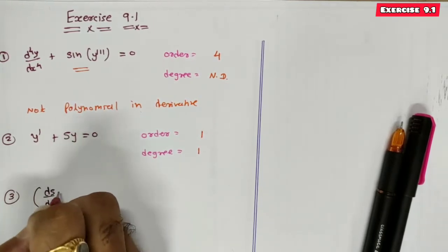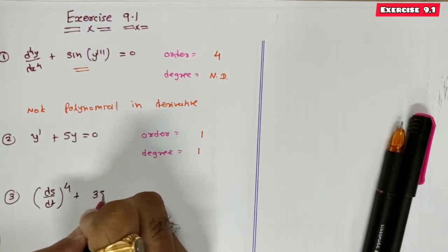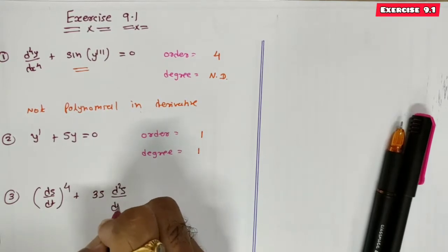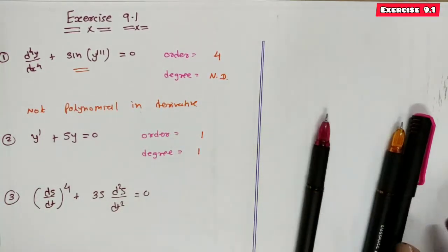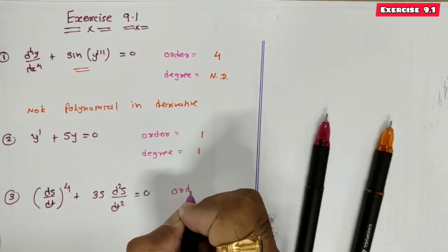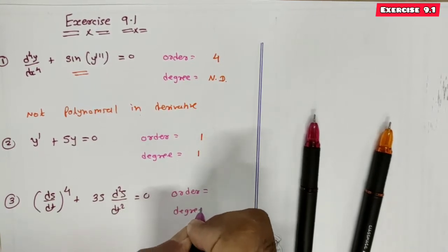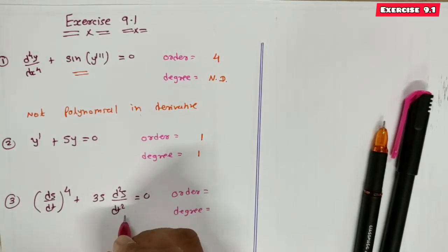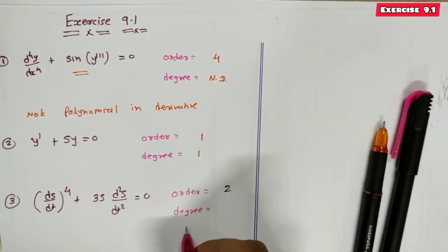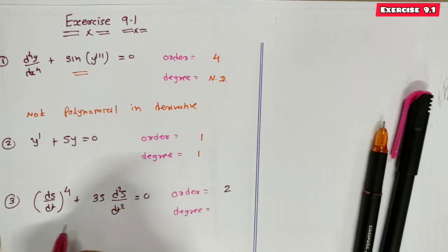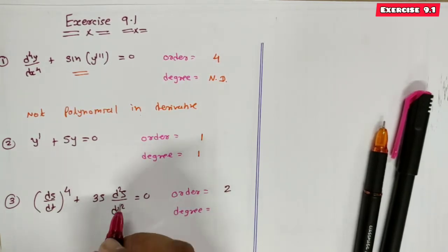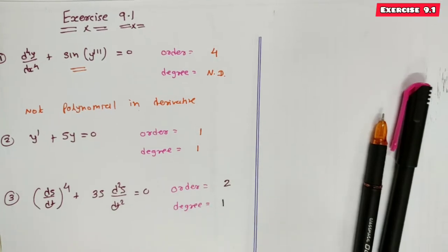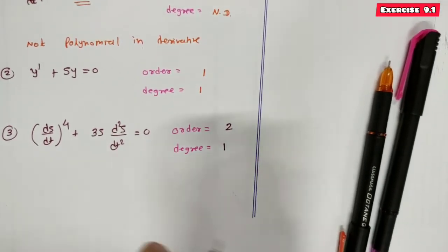Equation 3: (ds/dt)⁴ + 3s(d²s/dt²) = 0. The highest order derivative present in the equation — this is first order and this is second order — so the highest order derivative is 2, giving order = 2. The equation is polynomial in derivatives, and the power of the highest order derivative (order 2) is 1, so degree is 1.